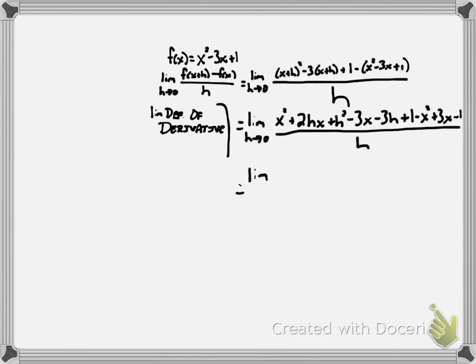This is the limit as h approaches 0. What's nice is that the x² terms are going to cancel out. I'll use a different color to help. And I can see that the 3x's are going to cancel out and the 1's are going to cancel out. And so I'll just be left with things that happen to have h's in them. Specifically, I'll be left with 2hx + h² - 3h.